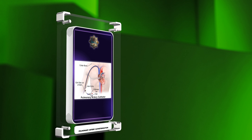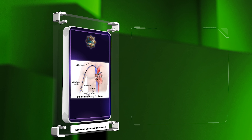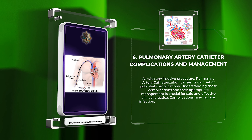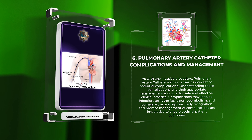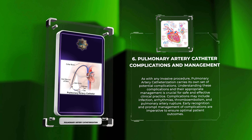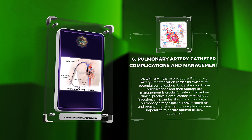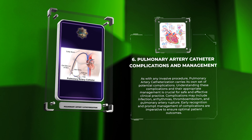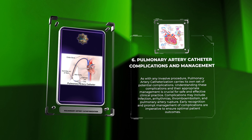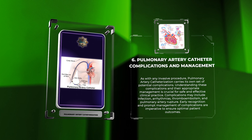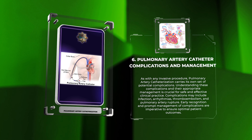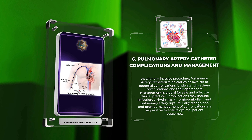As with any invasive procedure, pulmonary artery catheterization carries its own set of potential complications. Understanding these complications and their appropriate management is crucial for safe and effective clinical practice. Complications may include infection, arrhythmias, thromboembolism, and pulmonary artery rupture. Early recognition and prompt management of complications are imperative to ensure optimal patient outcomes.